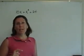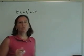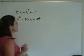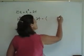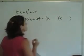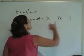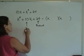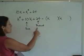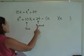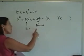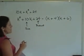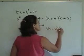If a polynomial is not in descending order of exponents, always rearrange it first. In this problem, put k squared out front, then 10k, then 24. Now it's ready to factor. Open two sets of parentheses with k in the front of each. I need two numbers whose product is 24 and whose sum is 10. Options 1×24, 2×12, and 3×8 don't add to 10, but 4 times 6 does: product is 24, sum is 10. The answer is k plus 4 times k plus 6.